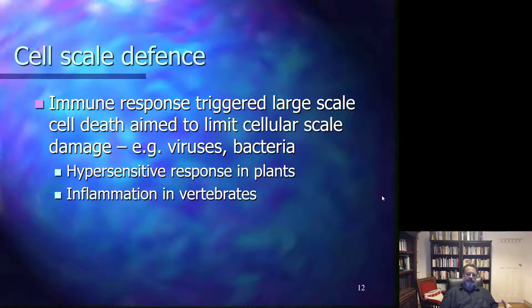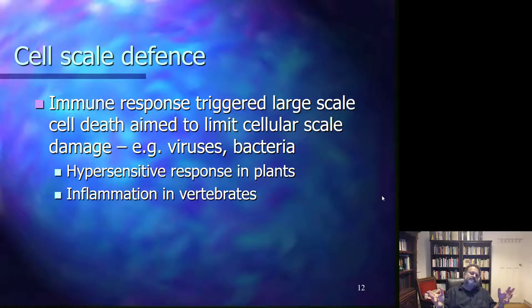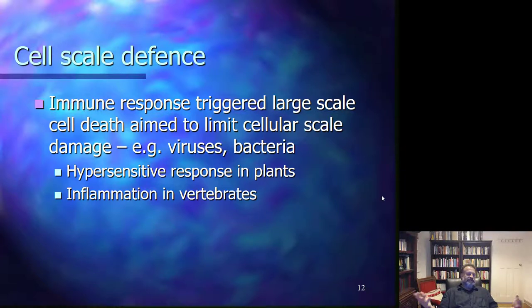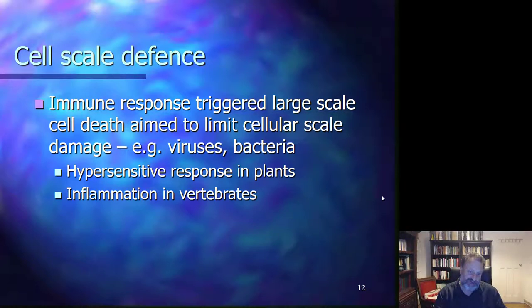In general, identity checking leads to identity enforcement when necessary. Identity enforcement happens, for example, by inducing programmed cell death in some cells, or by phagocytosis in the case of animals, where immune cells phagocytize and consume other cells which do not behave in accordance with the identity requirements of the organism. One version of this behavior is the cell-scale defense of the organism, where the immune response triggers large-scale cell death to limit cellular-scale damage possibly caused by viruses or bacteria. In plants, this is the hypersensitive response, where a considerable part of the plant tissue dies rapidly to limit the spread of viruses or bacterial damage. In vertebrates, there is inflammation, which helps the immune system kill a relatively large number of cells to limit the spread of infection.